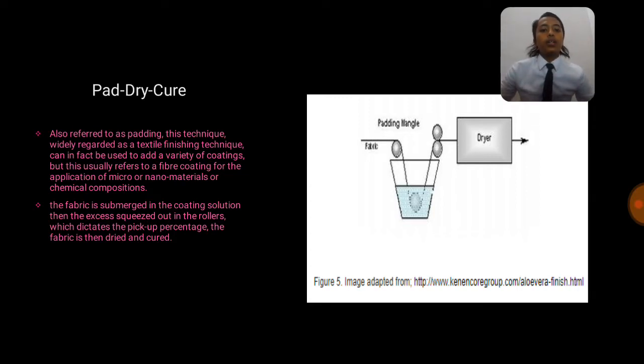Pad-dye-cure, also referred to as padding. This technique, widely regarded as a textile finishing technique, can in fact be used to add a variety of coatings, but this usually refers to a fiber coating for the application of micro or nano material or chemical compositions. The fabric is submerged in the coating solution, then the excess is squeezed out in the roller which dictates the pickup percentage. The fabric is then dried and cured.